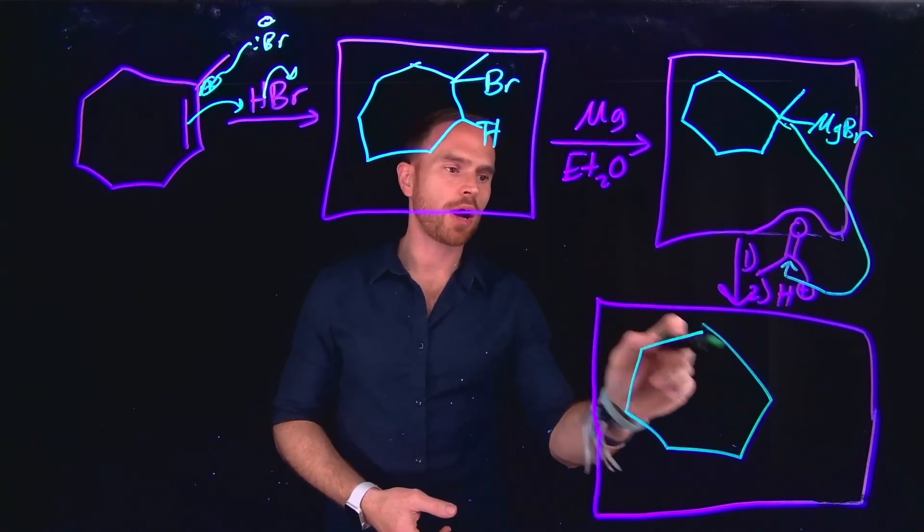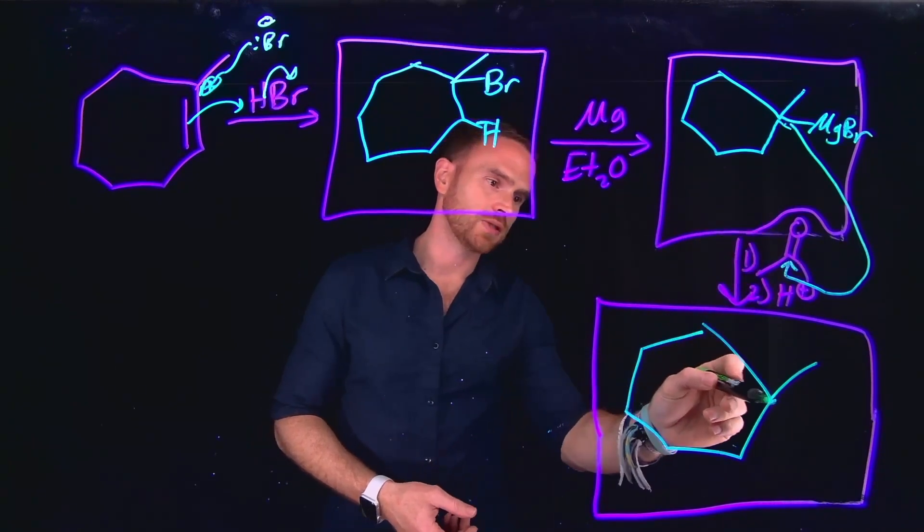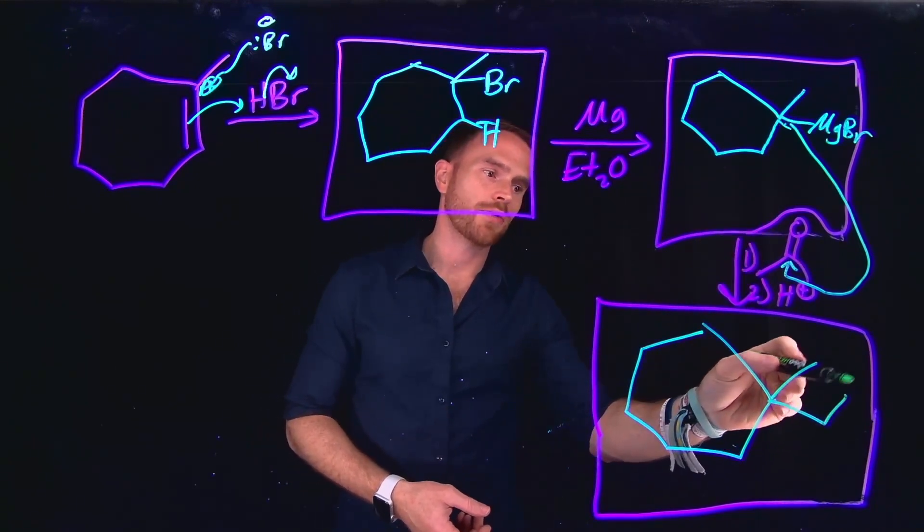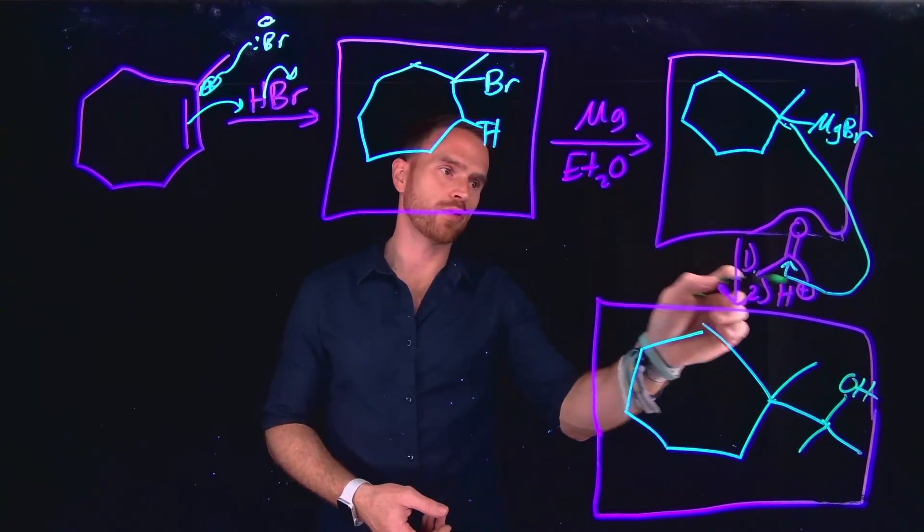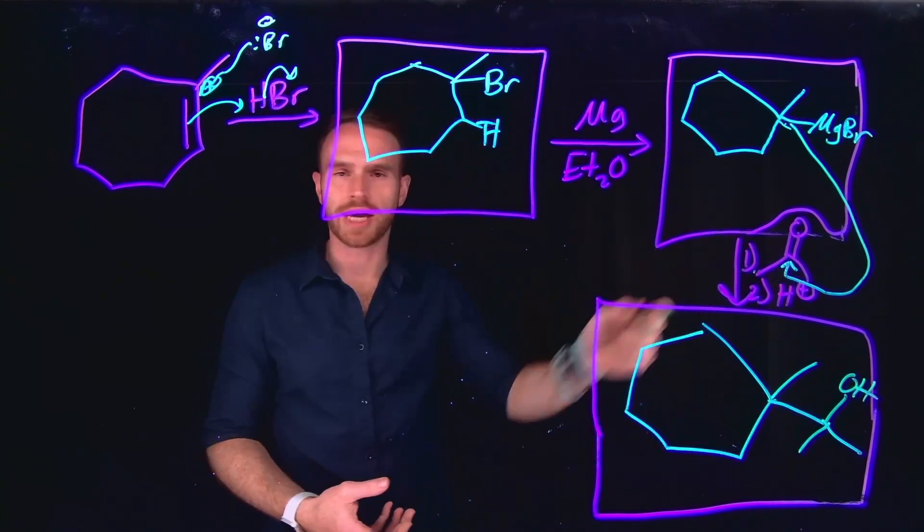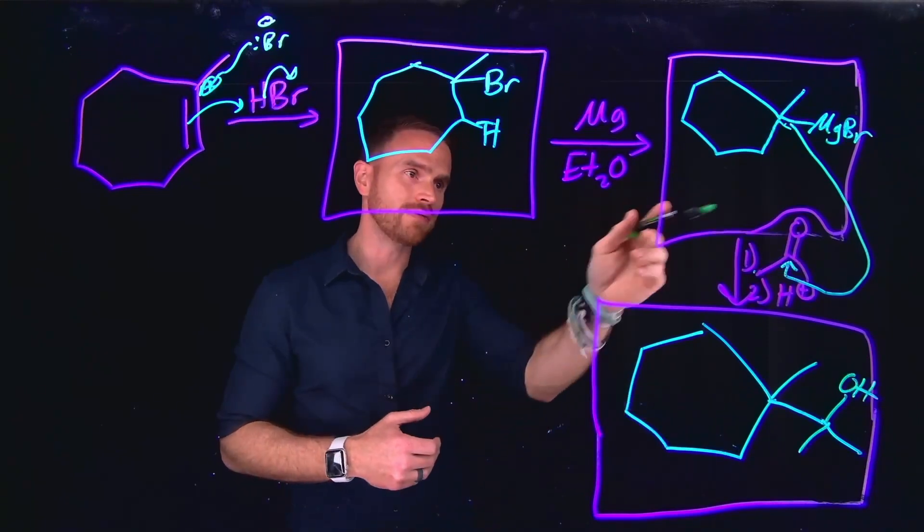So for this reason, when we go to draw our product, what we have is, remember, we have added the carbon at this position here. This is going to generate that alcohol, and then we're still left with our two methyl groups as part of our original reagent of acetone.